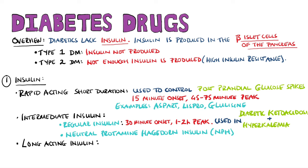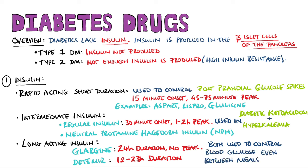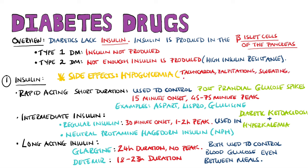The long-acting insulins include Detemir and Glargine. Glargine has no peak and has a 24-hour duration, while Detemir lasts between 18 and 23 hours. Long-acting insulin is used to keep blood sugar stable in periods between meals as well as close to meal time. The main side effect of insulin therapy is hypoglycemia, which can lead to tachycardia, palpitations, sweating, nausea, and convulsions. To reverse it, you would give glucose or glucagon.